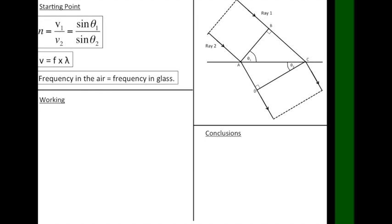For the final part, we need the work so far, the V equals F lambda equation, and an observation about frequency. The frequency of waves inside the glass is equal to the frequency in the air. Now, that might not seem very obvious to begin with, but if you think about the alternative, then it should become clear.